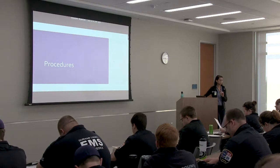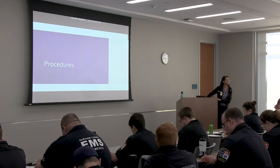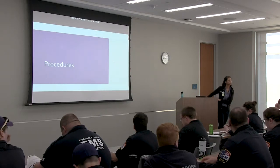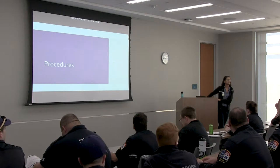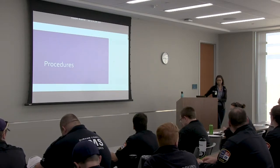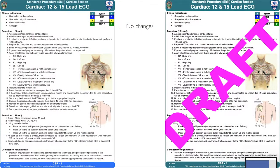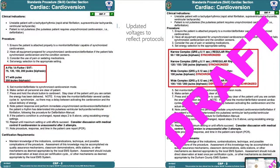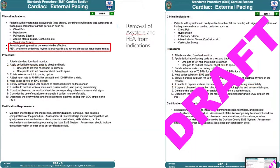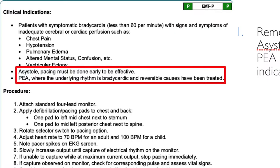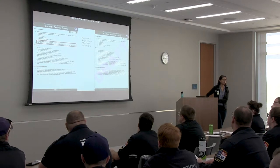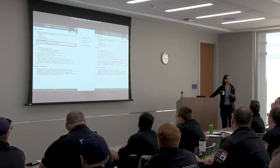Quick questions answered: no med control call needed for epi drip for bradycardia. Moving on to procedures: no changes with the 12 and 15-lead procedure. With cardioversion, voltages have been updated to reflect protocols. With external pacing, asystole and PEA have been removed as indications — we should not be pacing in asystole or PEA.